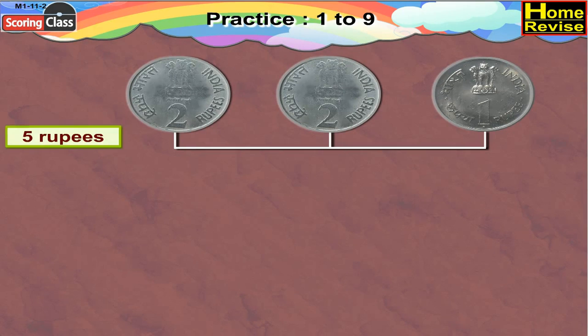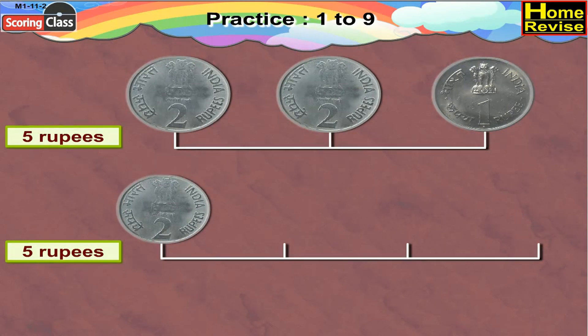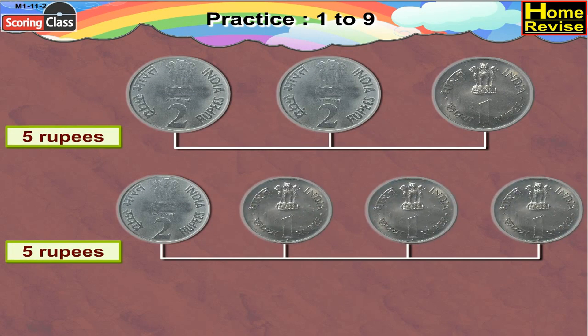Again we have to make 5 Rupees. For that we have another option as well, children. We can take 1 two-Rupee coin and 3 one-Rupee coins. That would be 2 Rupees plus 1 Rupee plus 1 Rupee plus 1 Rupee — that is 5 Rupees.